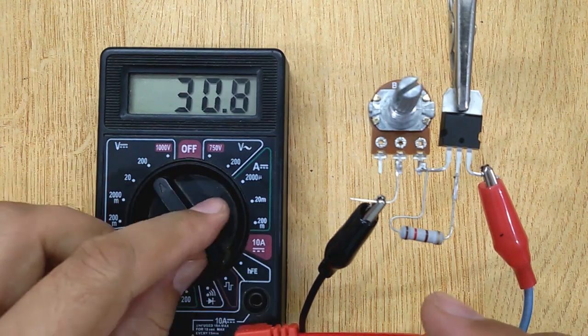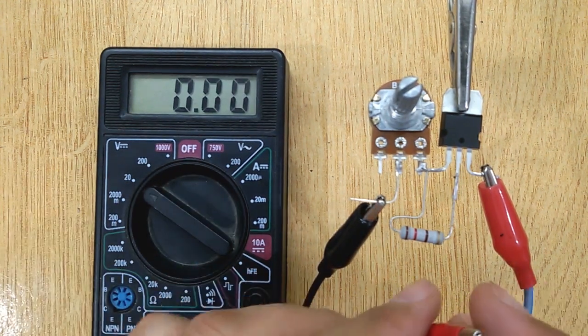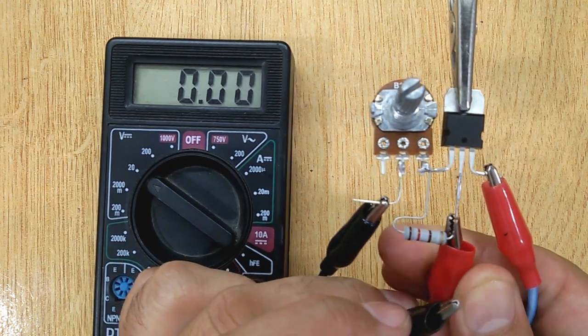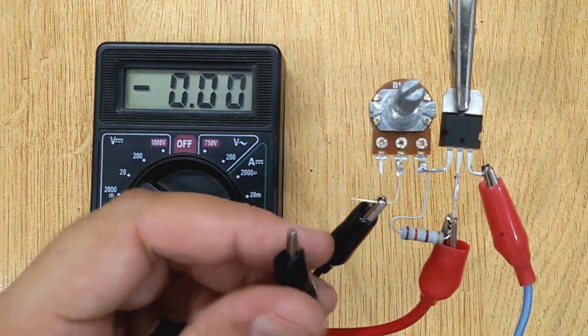To check the circuit, we will use a multimeter. Connect the positive terminal of multimeter with middle pin of transistor and connect the negative terminal with the middle pin of potentiometer.